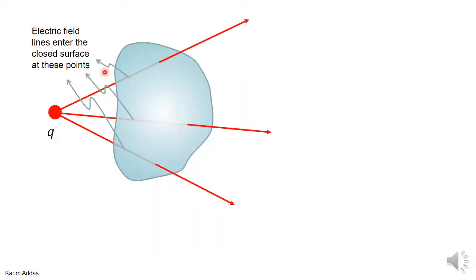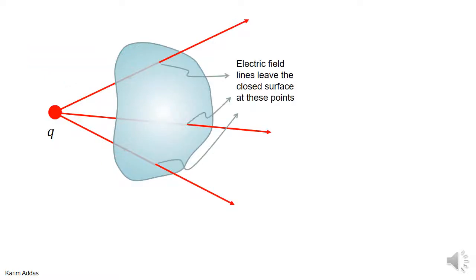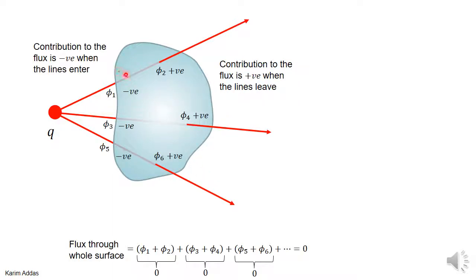You can think about it this way: if you have a closed surface and inside the closed surface there's no charge at all — the charge is outside — then whenever the electric field line goes in at various points, the contribution is negative, and wherever the electric field goes out of the surface, the contribution is positive. Each pair of contributions cancels out and gives you zero. There are not just three lines — there are an infinite number of lines, because we cut up this surface into an infinite number of parts. So I'm just showing you here the idea.